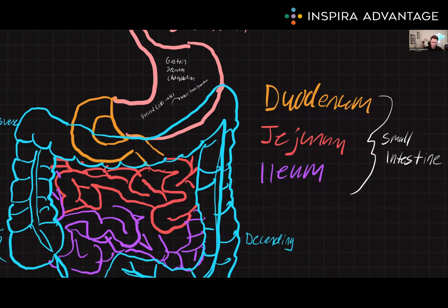The duodenum is the first part of the small intestine, and it is directly where food will move to after passing through the stomach. It is about 25 centimeters long, and it receives secretions from the pancreas and the liver via the pancreatic duct and the common bile duct. These secretions contain enzymes that aid in the breakdown of food. The duodenum also receives chyme from the stomach via the pyloric sphincter, which prevents food from moving into the duodenum before it has been in the hydrochloric acid long enough.